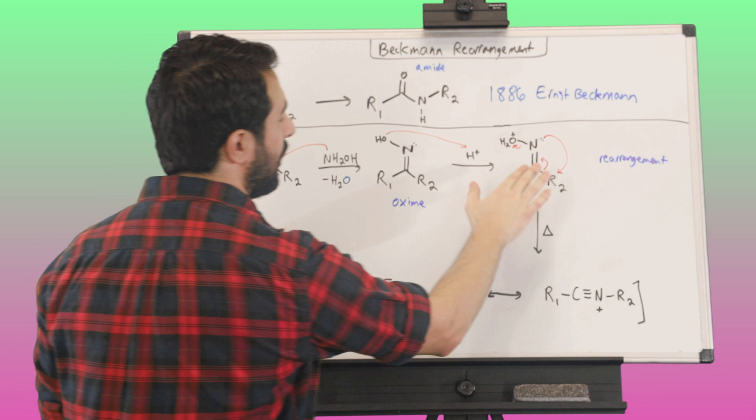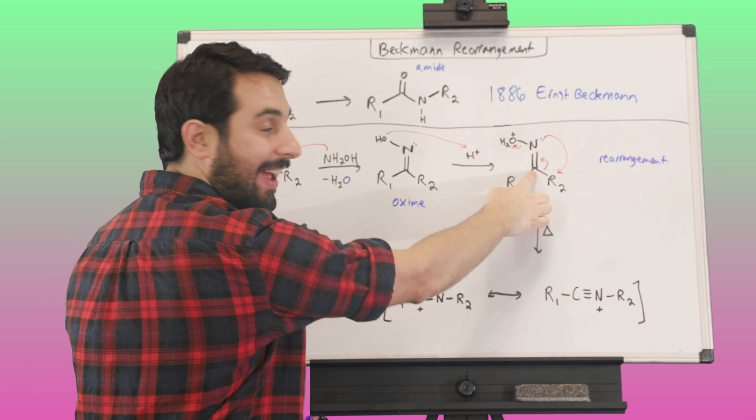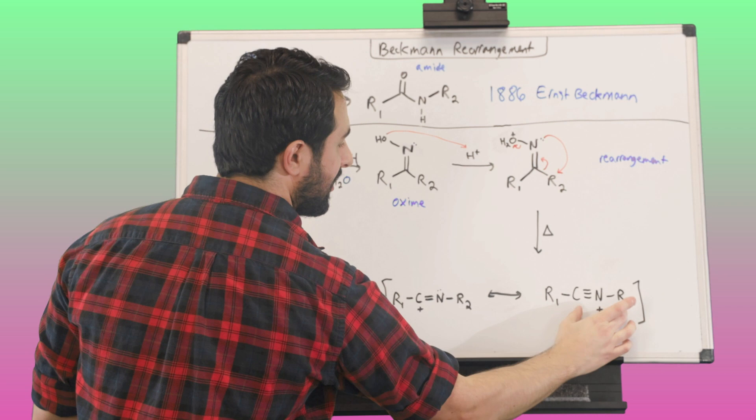What we're left with has two resonance structures. We'll look at this one first. We've got R1 connected to this carbon, and now this carbon has that third bond right here, right? This arrow means there's now three bonds to nitrogen. We've kicked that off, but this nitrogen is now coordinated to R2, right? So this is the key step.